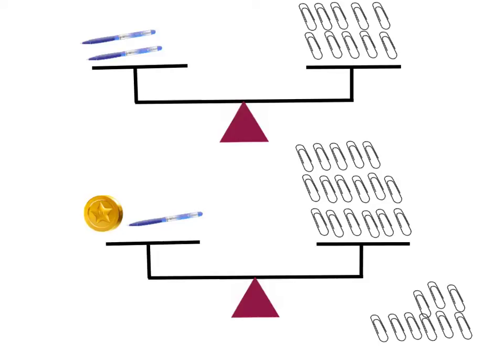So let me show you how this works. This first problem here — what we need to figure out is how many coins is equal to how many paperclips, so one coin is equal to how many paperclips. Now we can't solve this problem yet, because we have a pen and we have a coin, and those aren't equal things — they're different.